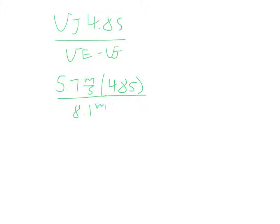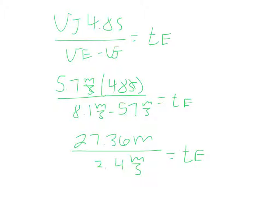So let's go over to the next slide. And I'm out of room. So my VJ, just rewriting this, times 4.8 seconds divided by VE minus VJ. VJ was equal to 5.7 meters per second times 4.8 seconds divided by 8.1 meters per second minus 5.7 meters per second. And this all equals Edward's time. 5.7 times 4.8 is 27.36. The units, seconds cancel, so you're left with meters on the top, over 8.1 minus 5.7 is 2.4. Units over here are meters per second, equaling the time for Edward. Dividing those, we get an even 11.4 seconds for his time.